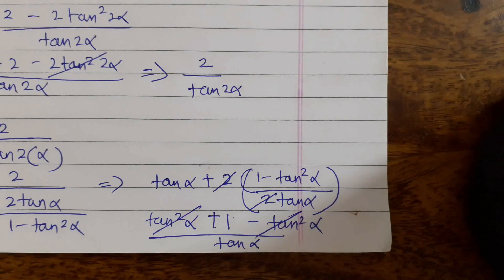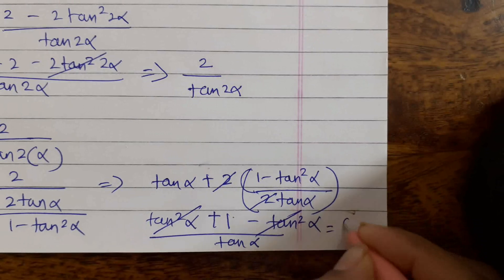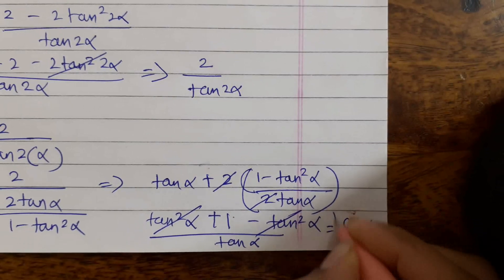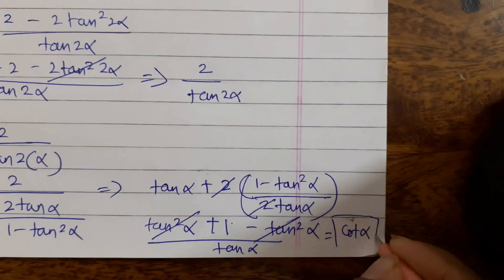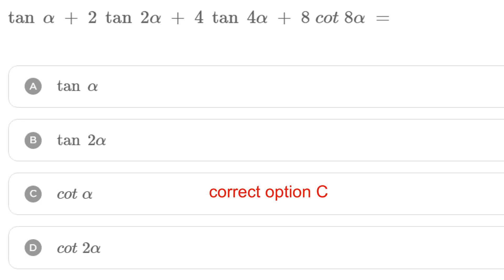The tan²α and −tan²α cancel, and we are left with 1/tan α, which is equal to cot α. So the answer is cot α. Thanks for watching.